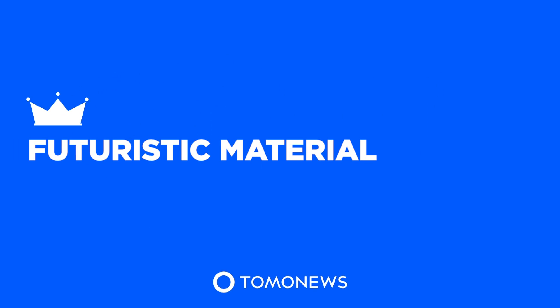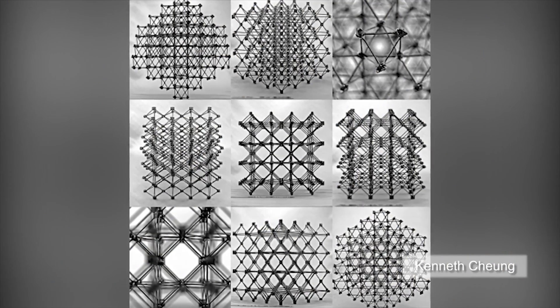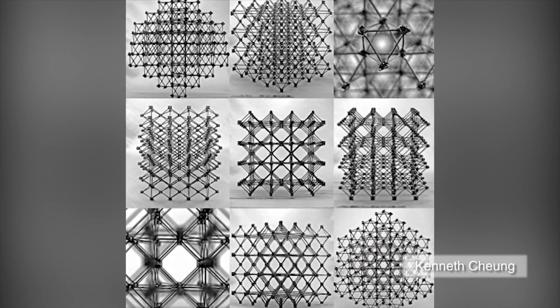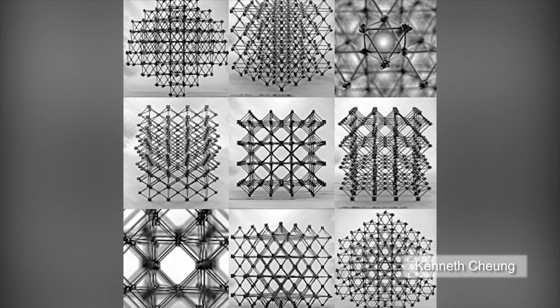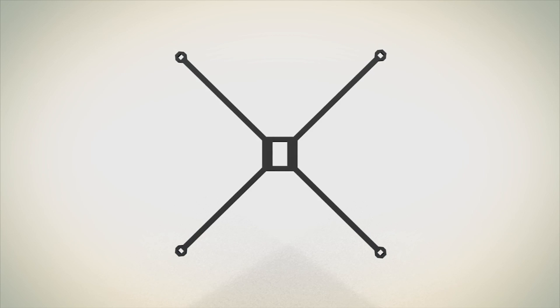Tomo News presents futuristic material. MIT researchers have developed a lightweight structure of tiny blocks that may revolutionize the assembly of large objects. The individual pieces are linked together like chain mail.